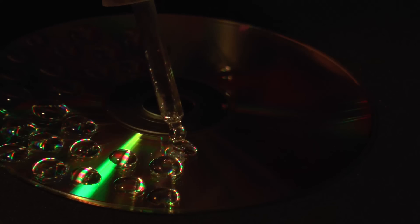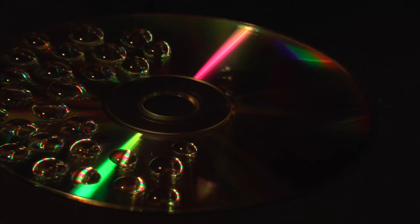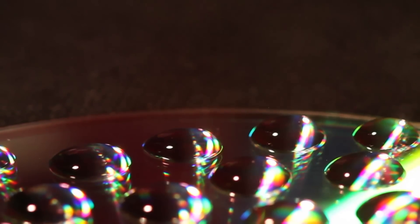Only when the water drops have a sufficient size do they form nearly perfect spheres on the CD's surface. If the water drops are too small, then they'd rather have the shape of a lentil.